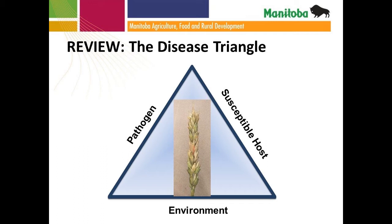I can't do a disease management talk without talking about the disease triangle. When we're talking about disease management and the development of disease, we need three things: the pathogen, a susceptible host, and conducive environmental conditions. If we can manage two of these factors — we obviously can't control the environment very well — managing the pathogen side and the host portion hopefully allows us to manage the risk.